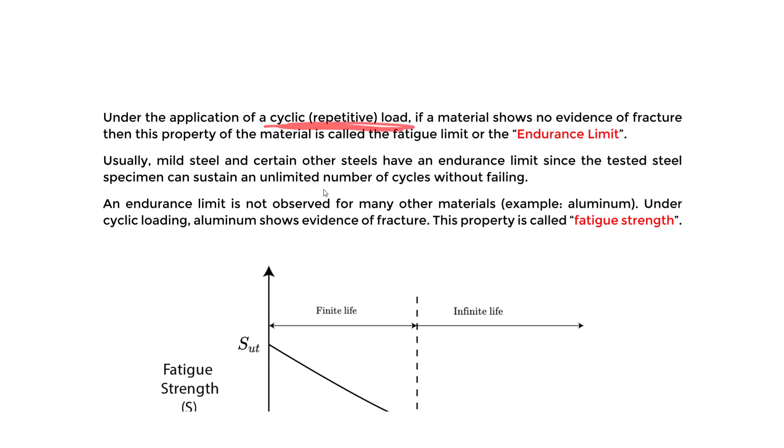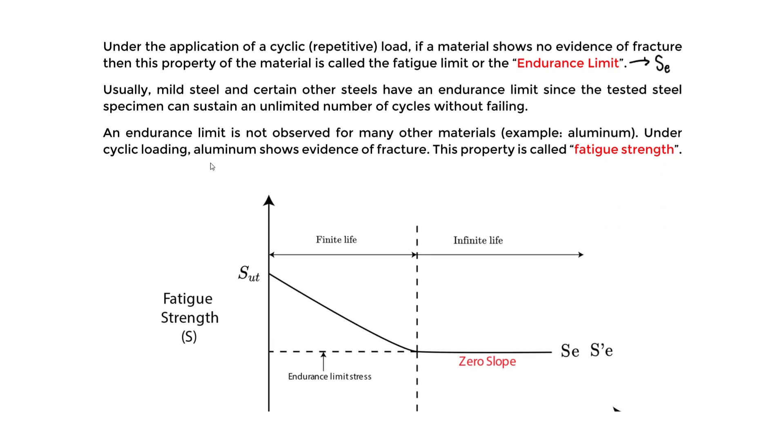We know that under the application of a cyclic repetitive load, if a material shows no evidence of fracture, this property is called the fatigue limit or in other words the endurance limit. The endurance limit is denoted by the variable SE in the handbook. That's the definition - no sign of fracture. At this endurance limit, we can essentially just keep loading the specimen.